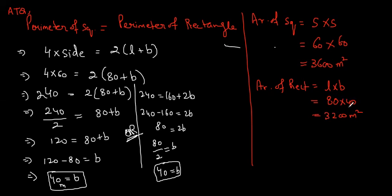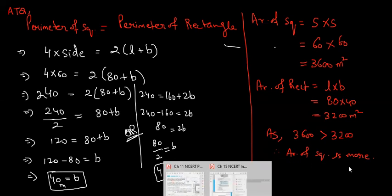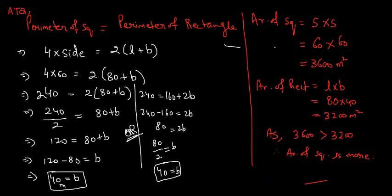By just the look of it, quite a possibility it is looking like rectangle has more area, isn't it? But yes, while actual calculation, square has more area as 3600 is greater than 3200. Therefore, area of square is more. Make sure you write a final statement. Any doubt in this particular question? No, no, very good.